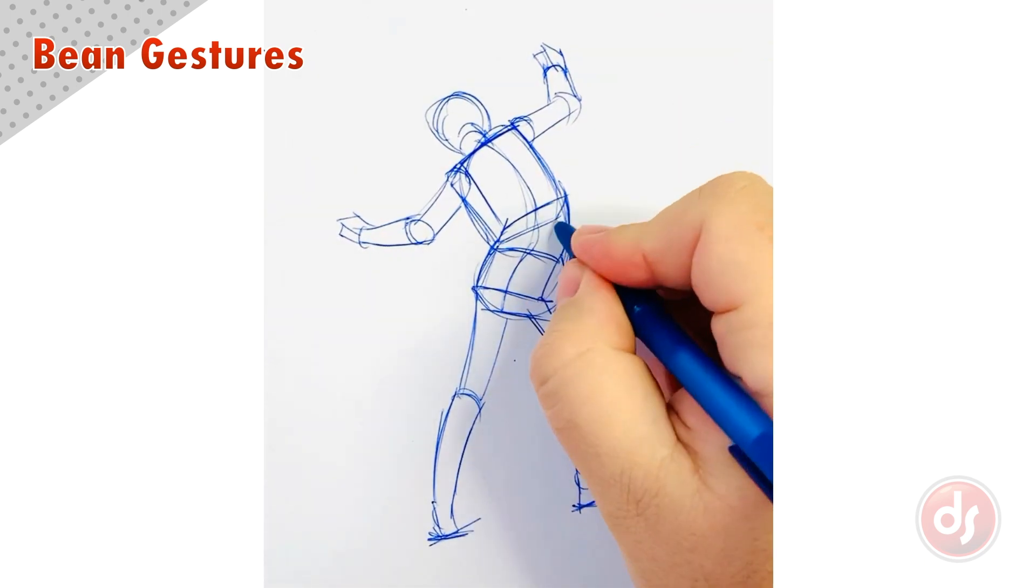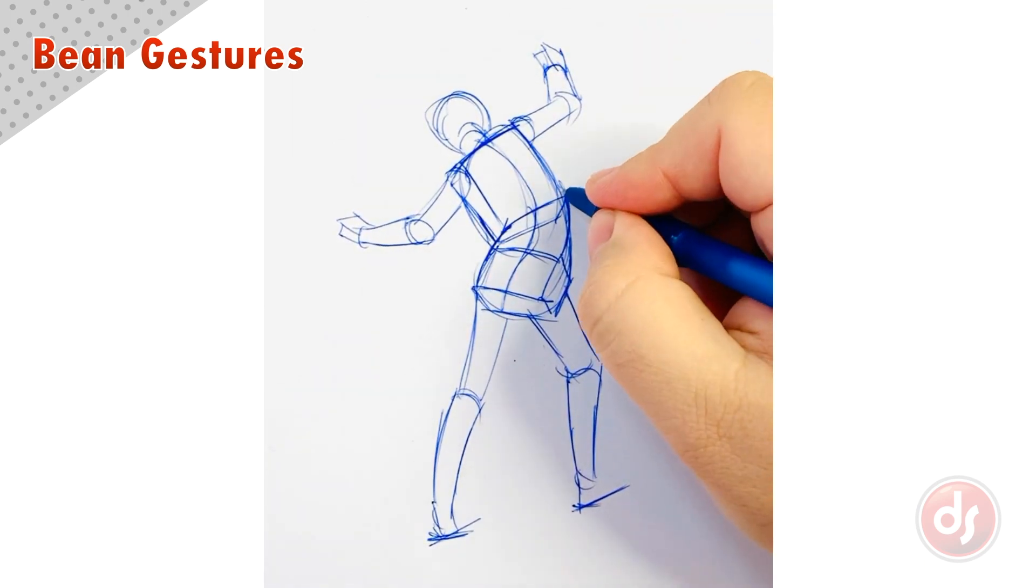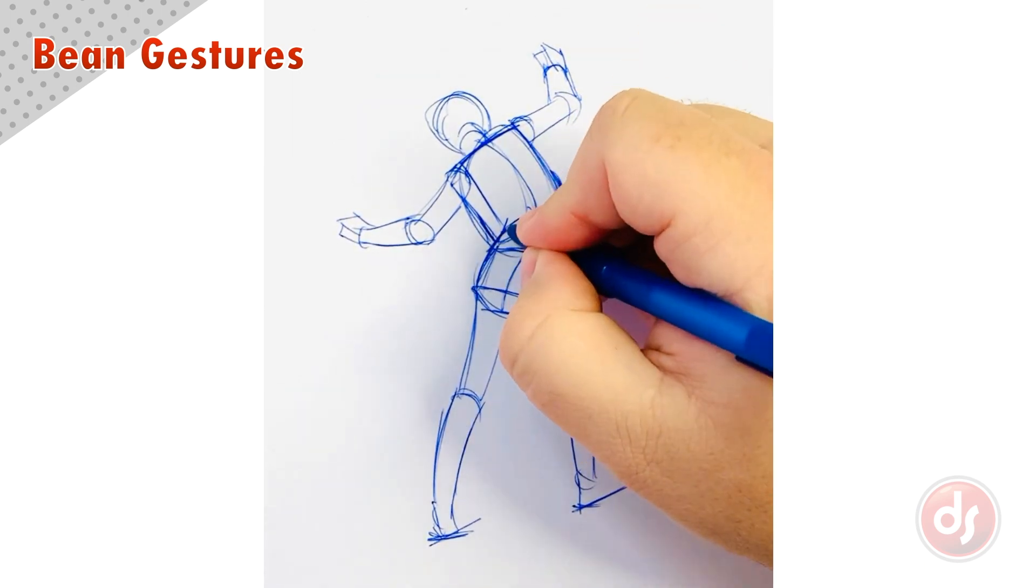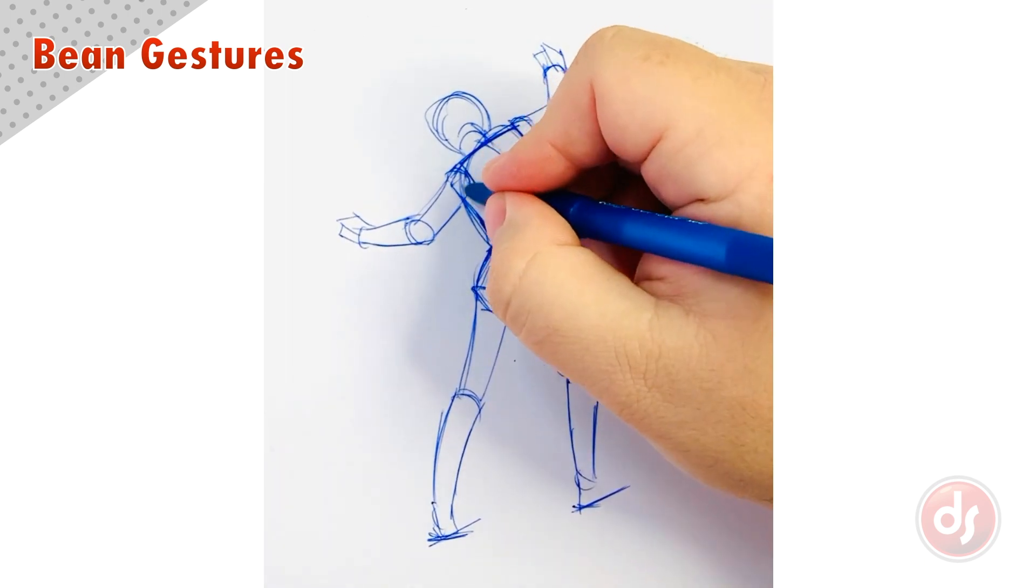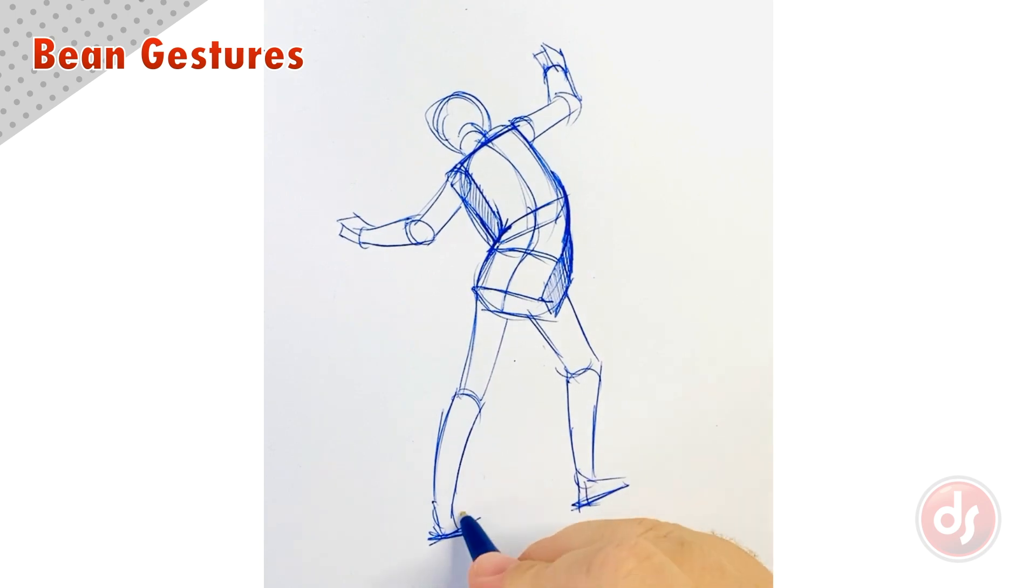It's very easy in a pose like this to let the ribcage and pelvis pull apart, but the bean shape gives me a framework to keep them correctly aligned. The bean shape is a really effective method for capturing the complexity of the ribcage and pelvis and is a great foundation to build on top of.